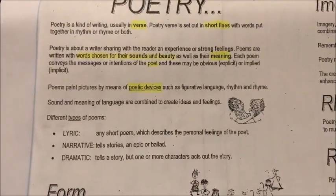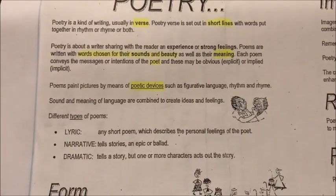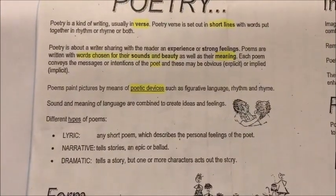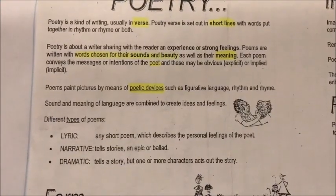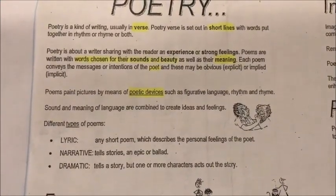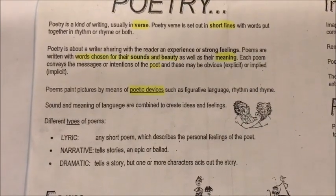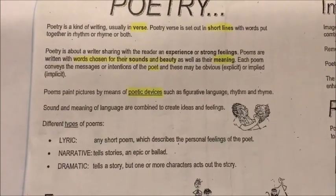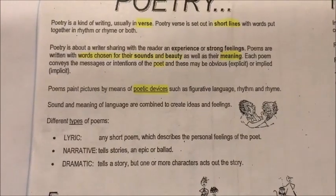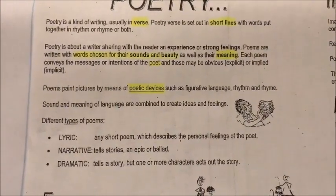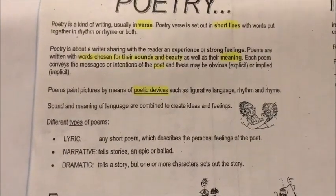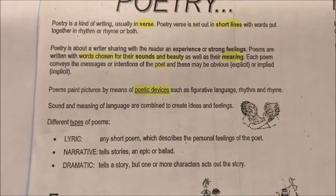The last important line in the opening paragraphs is: poems paint pictures by means of poetic devices such as figurative language, rhythm and rhyme. Poetic devices are the tools that a poet will use, like figurative language. So they will describe the moon as a big block of cheese because they want you to see that it's yellow. Or they will say the clouds are crying — it's actually rain falling. So they use poetic devices so that you make up a picture in your head.